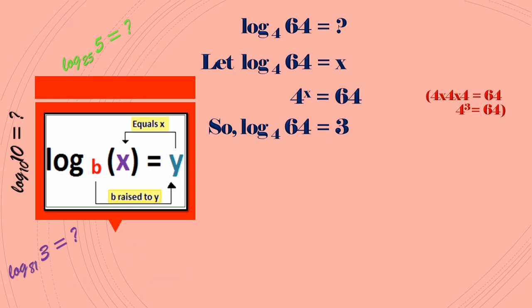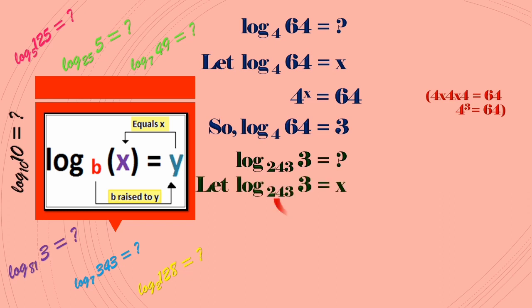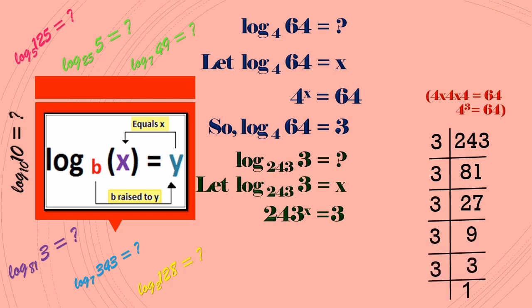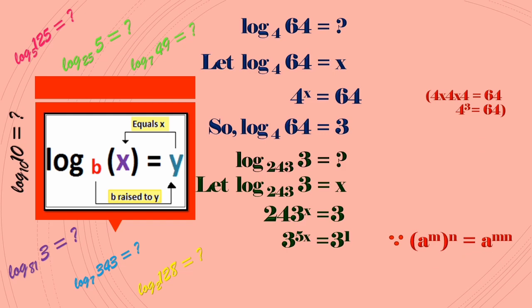Now see another example: log₂₄₃(3), how much? Let us say log₂₄₃(3) is x. You can rewrite it as 243^x = 3. On prime factorization of 243, we get 3^5. So (3^5)^x = 3^1. Since (a^m)^n = a^(mn), we have 3^(5x) = 3^1.